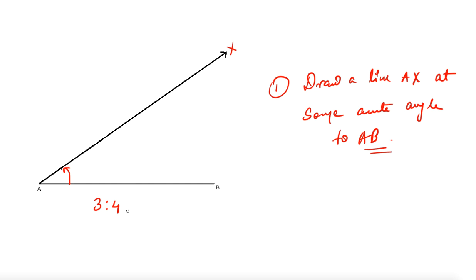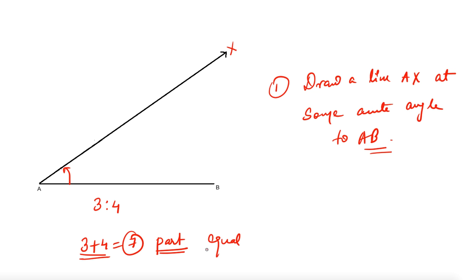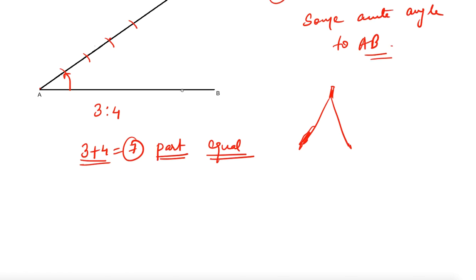Now, we have to divide AB in ratio 3:4, so we divide AX into 3+4 = 7 equal parts. To divide into 7 equal parts, take a compass, fix it at any measure, fix the pin point here and cut, fix here and cut — repeat until you have 7 equal divisions.